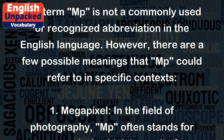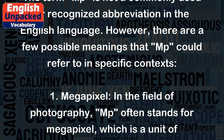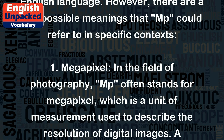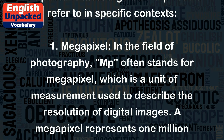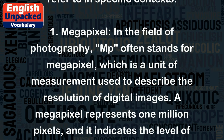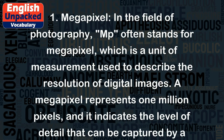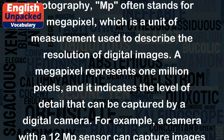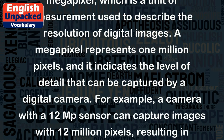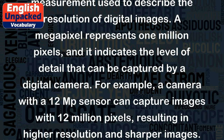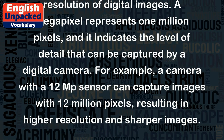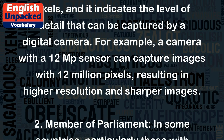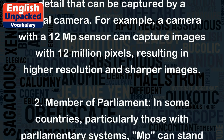1. Megapixel. In the field of photography, MP often stands for megapixel, which is a unit of measurement used to describe the resolution of digital images. A megapixel represents 1 million pixels, and it indicates the level of detail that can be captured by a digital camera. For example, a camera with a 12MP sensor can capture images with 12 million pixels, resulting in higher resolution and sharper images.